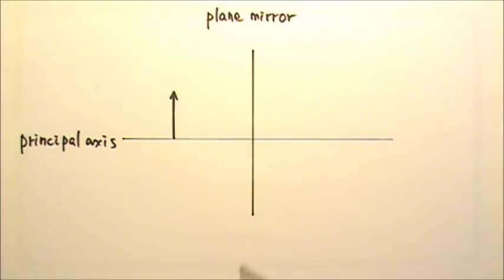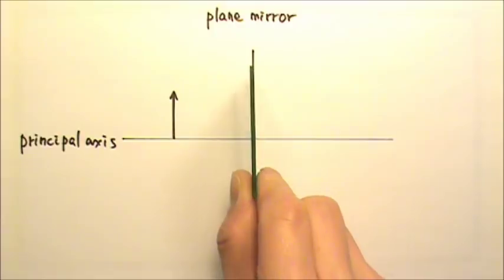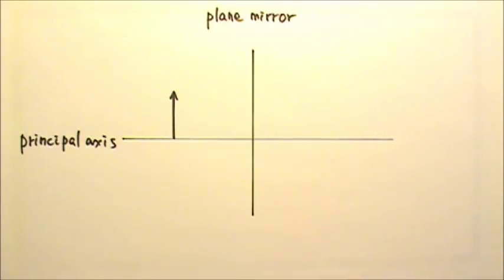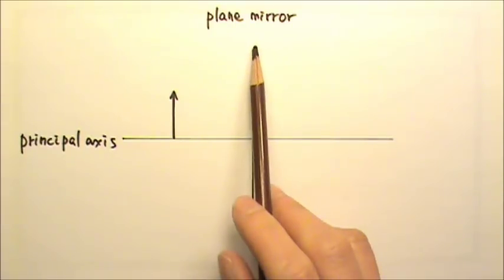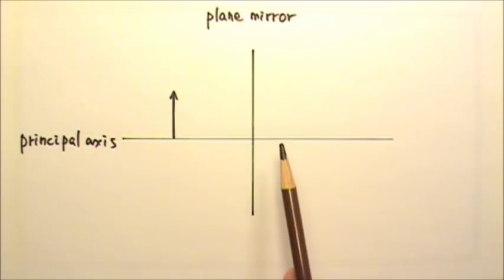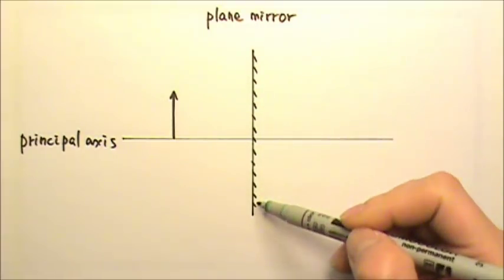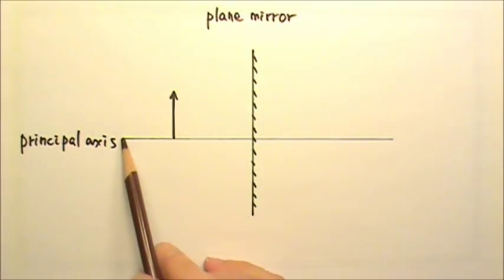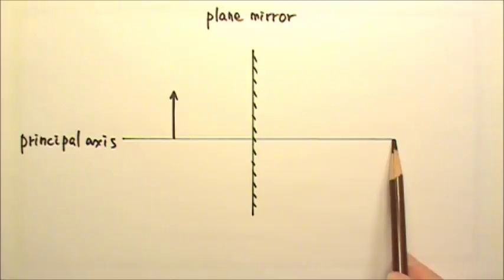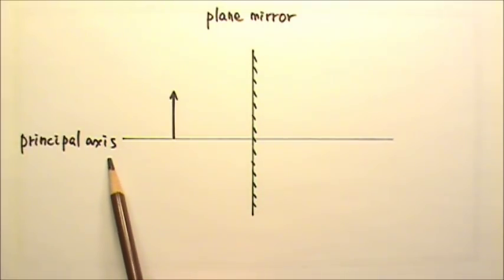Here's the plane mirror. It is perpendicular to the paper like this. To show that the smooth, shiny side of the mirror is on the left side, I usually draw these little lines on the back side of the mirror. This line here is perpendicular to the mirror and it can be called the principal axis.